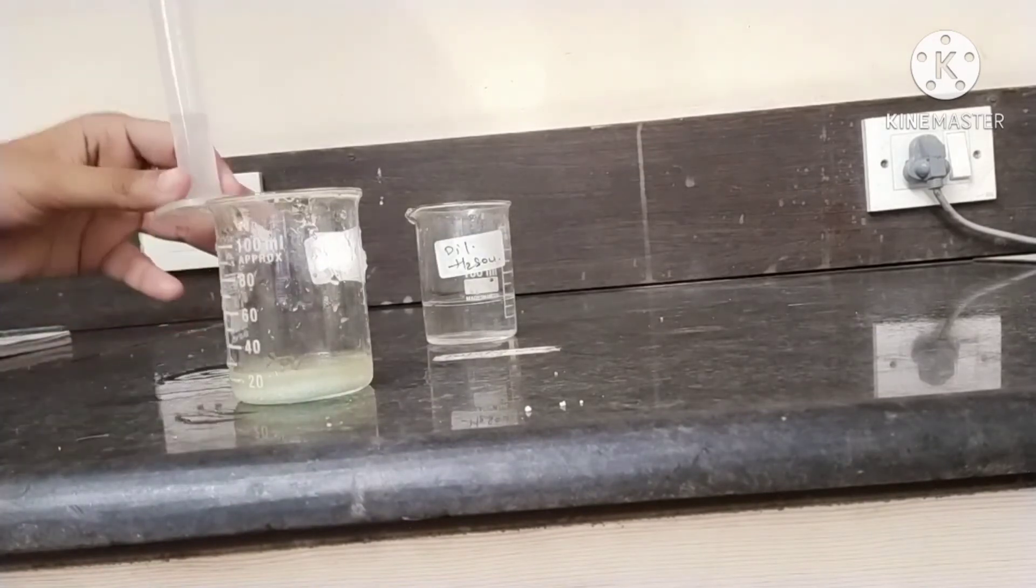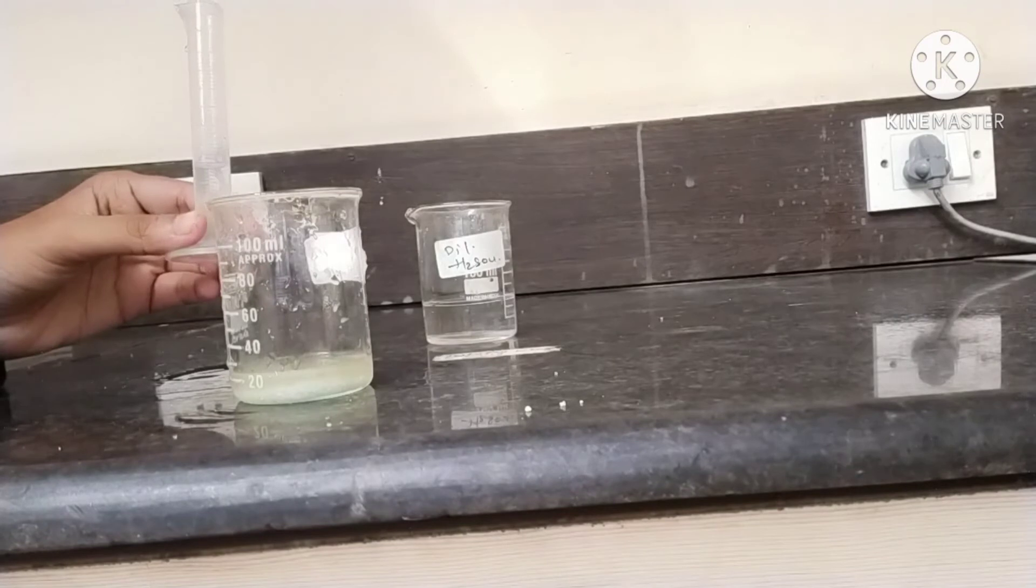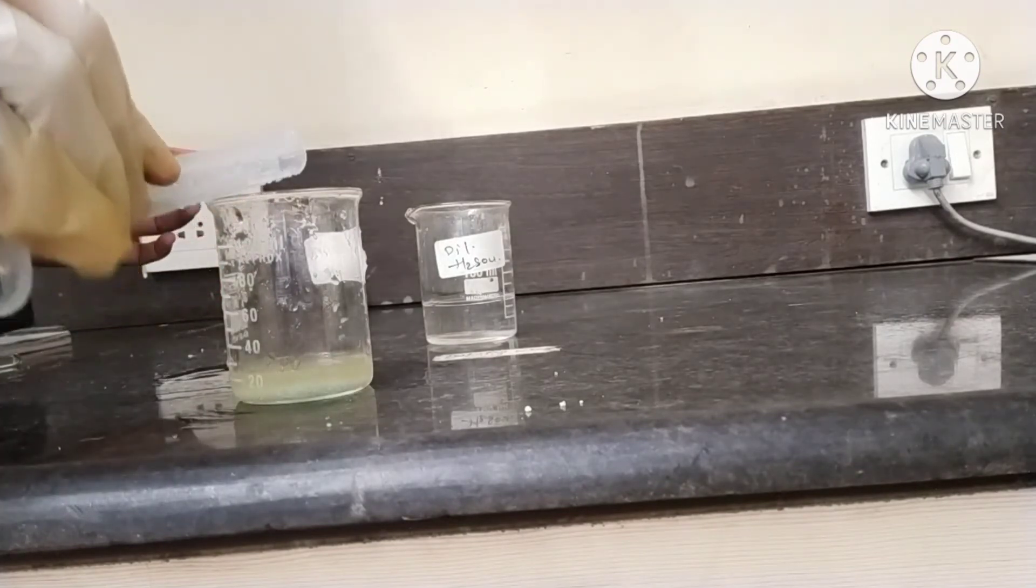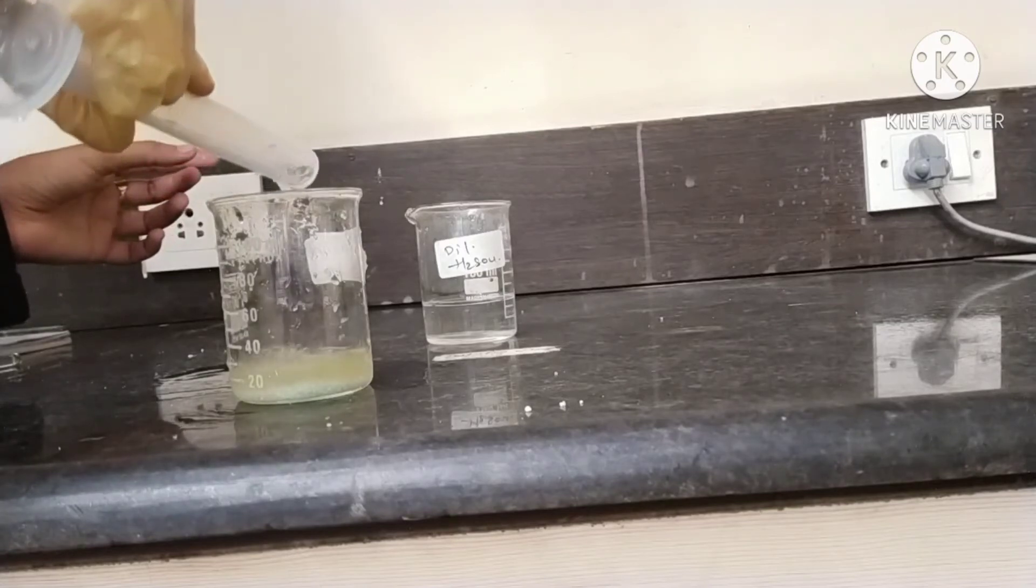Then add 2-3ml of dilute sulphuric acid with the help of a measuring cylinder.